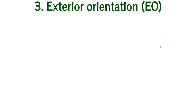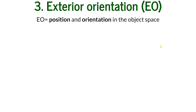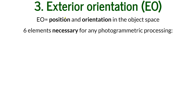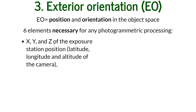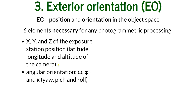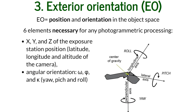We've mentioned exterior orientation of the camera a couple of times. What is that? It is the position and orientation of the camera in space. It involves six elements total: three for position and three for orientation. The first three — position — are the X, Y, and Z of the exposure station, meaning the latitude, longitude, and altitude where the camera was exactly located when it triggered the photo.